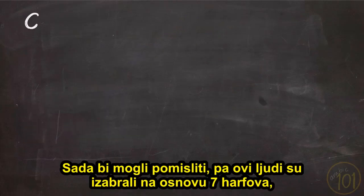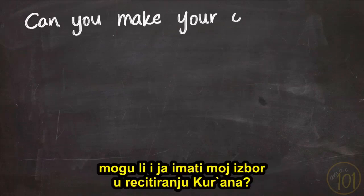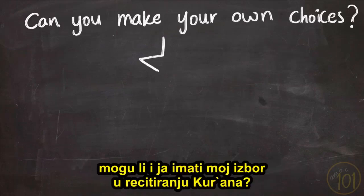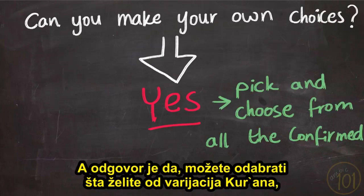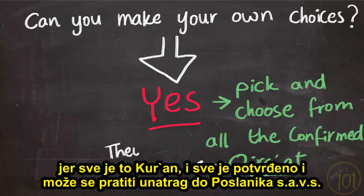You might be thinking: well, these people have made choices based on the seven ahroof — can't I just have my own choices in reciting the Quran? The answer is yes — you can actually pick and choose what you want from the variations of the Quran, because it is all Quran and it is all confirmed and can be traced back to the Prophet, peace be upon him.